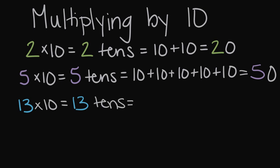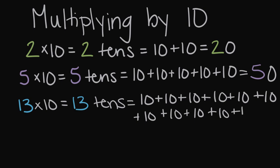And we can count 13 tens. We'd have a 10 plus another 10, plus another. There's three, four, five, six tens, seven, eight, nine, 10. We're almost there, 11 tens, 12 tens, and finally a 13th 10.